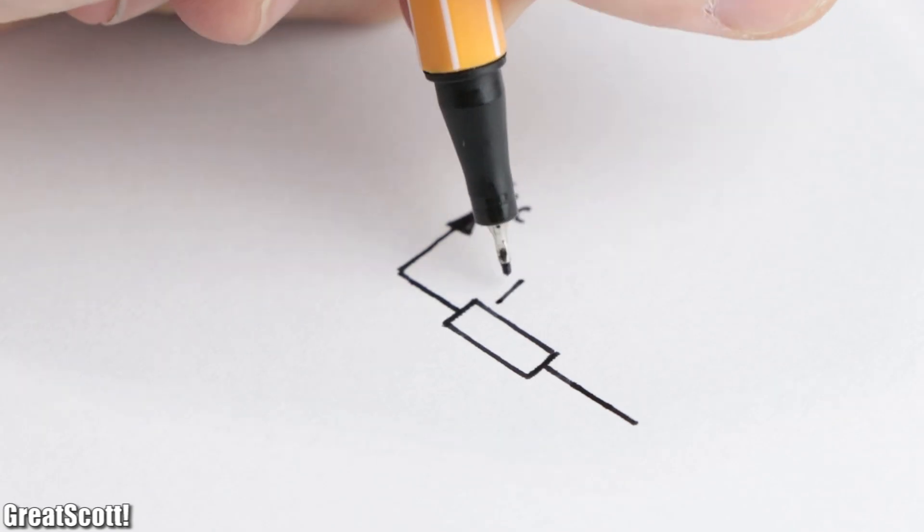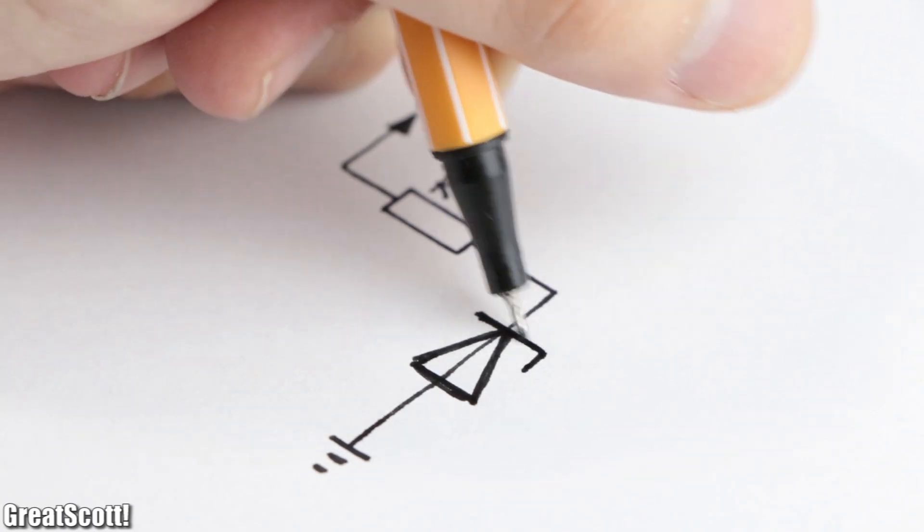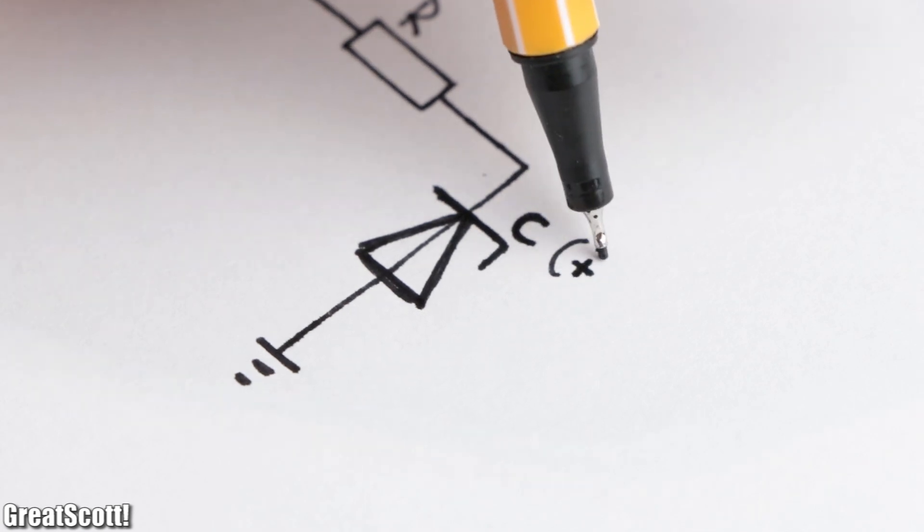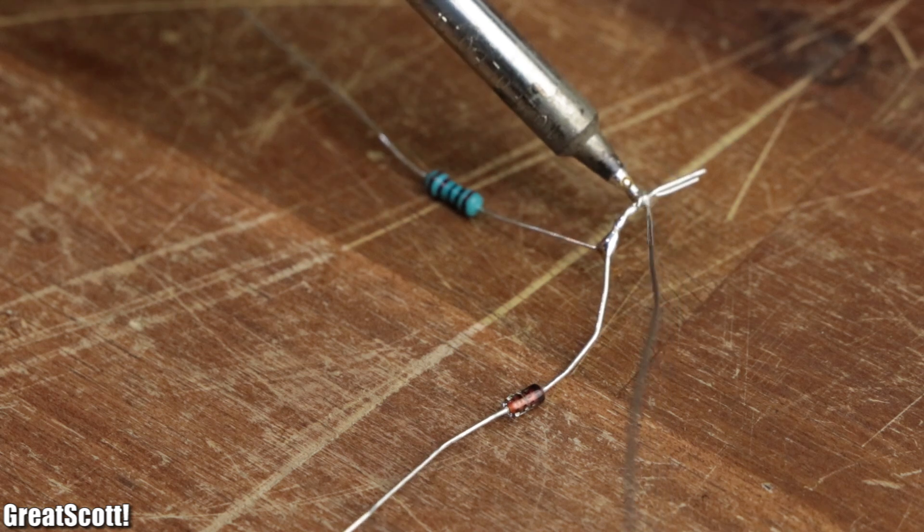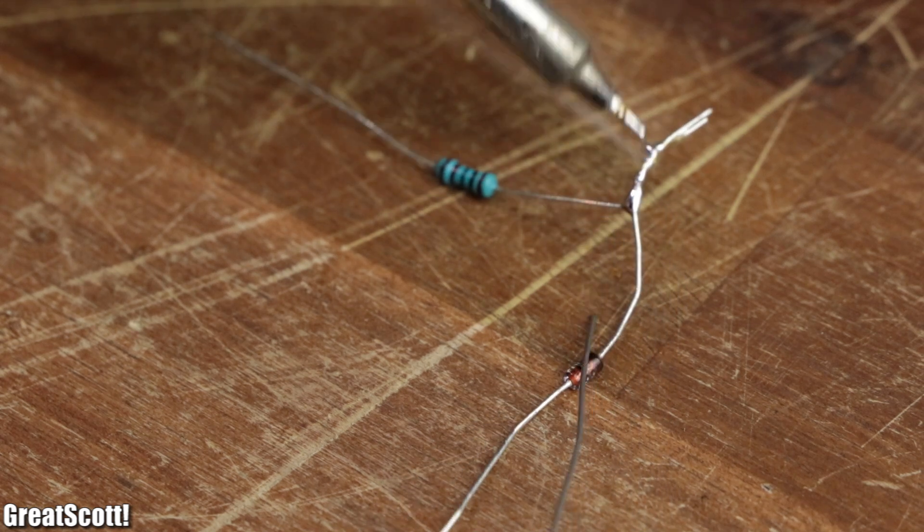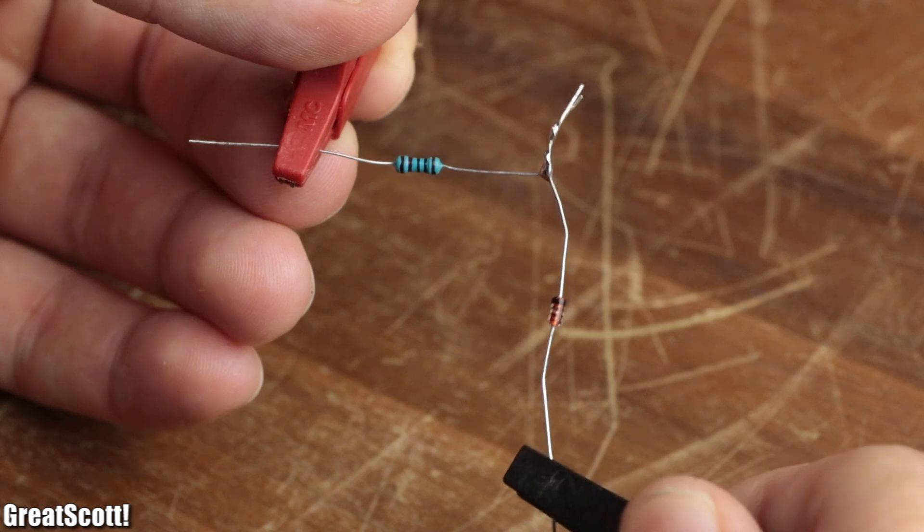Instead, we can add a resistor in front of it and connect it reverse biased, which means that the cathode has the positive potential and the anode the negative potential. Before we can do anything useful with this circuit though, we need the two most important specifications of a Zener diode: its Zener voltage and its power dissipation.